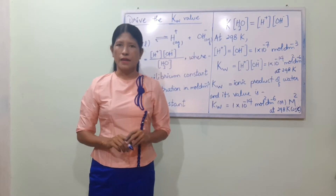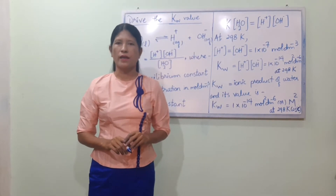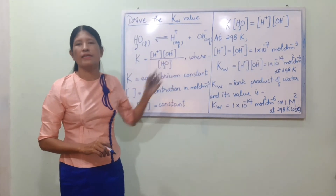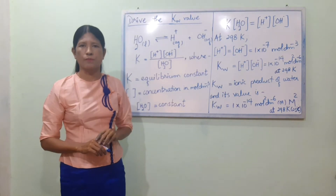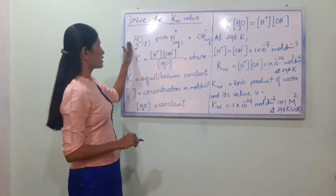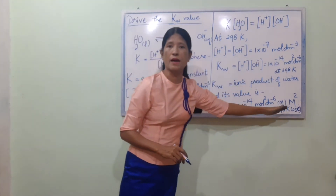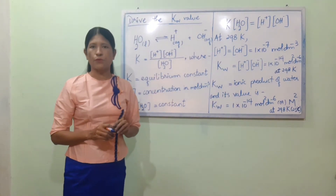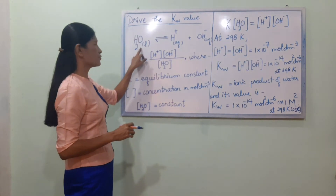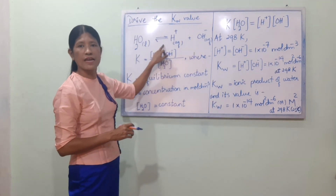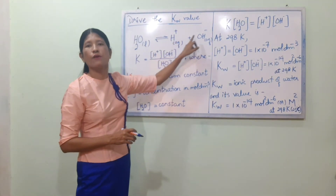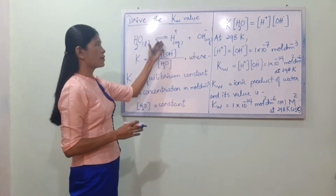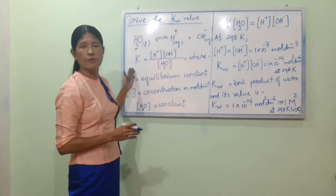If you have the dissociation of water, you can derive the value of KW. The equation is: H2O (liquid) in a reversible reaction gives H⁺ ion and OH⁻ ion. The equilibrium constant is K.